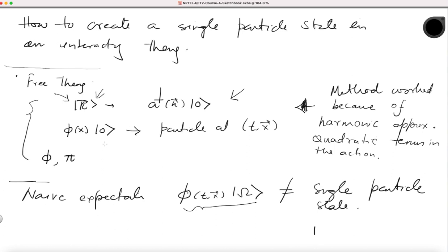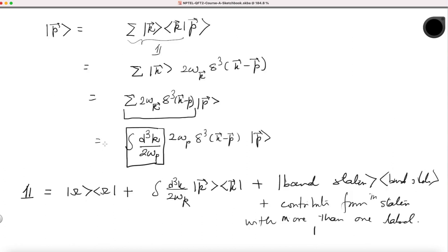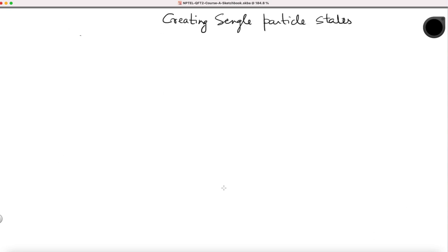Before we proceed, I noticed that last time I had written d³k over 2ω_p, but I have corrected it to k. It cannot be p here — when you use the delta function you have either p or k, you cannot have a mixture. So let's go back to creating single-particle states.